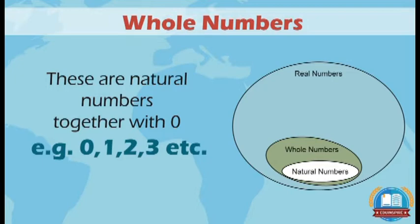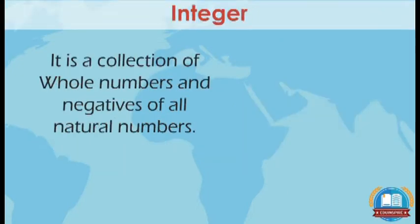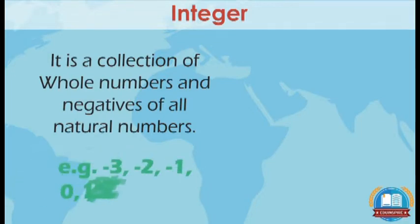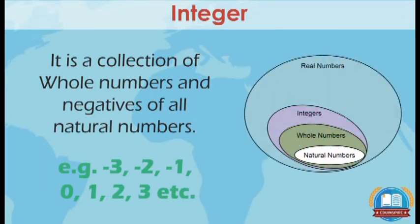The next component is integers. It is a collection of whole numbers and negatives of all natural numbers. Example: -3, -2, -1, 0, 1, 2, 3, etc.